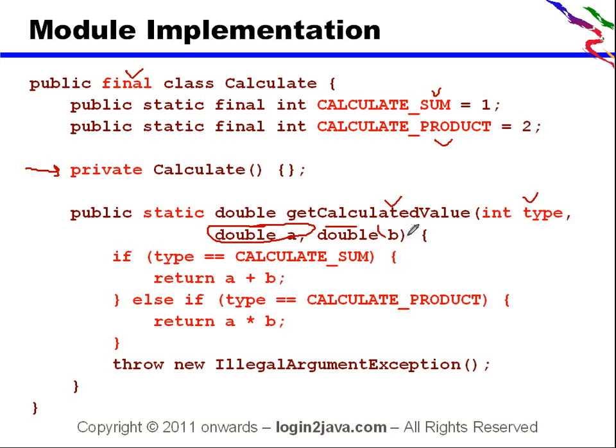And here goes your code where you take if the type of the calculation is sum, return A plus B. Otherwise, the type of the calculation, if it is product, you can return A into B. Otherwise, you can throw an illegal argument exception.